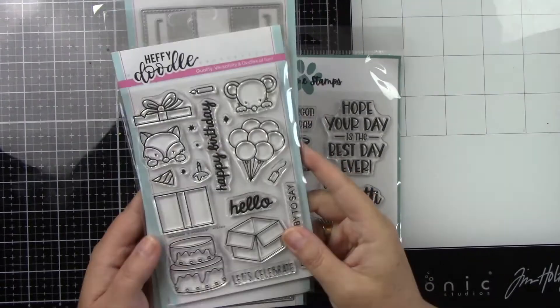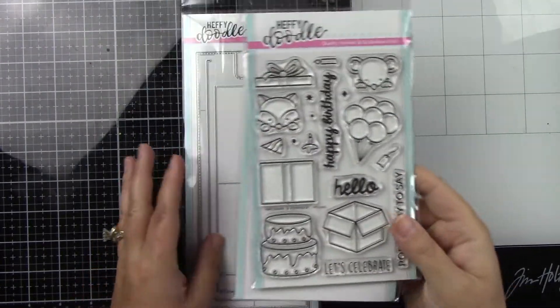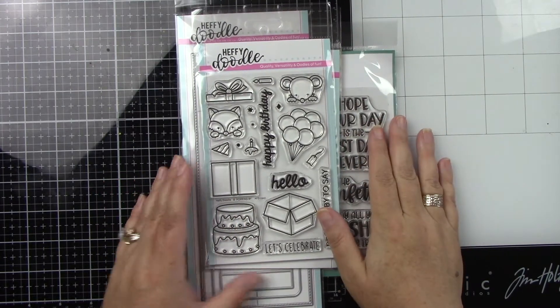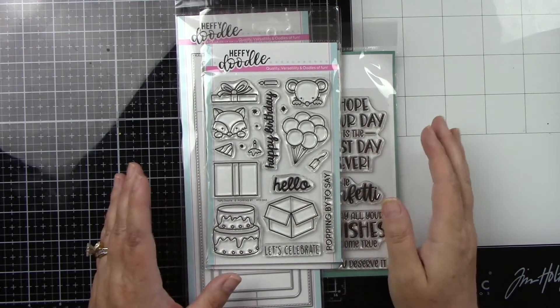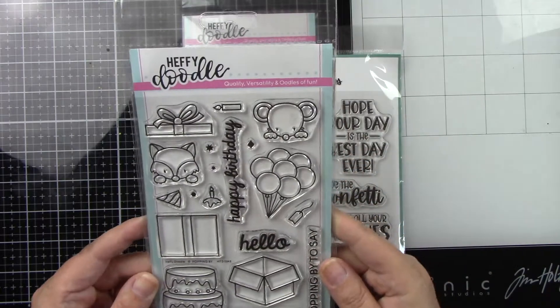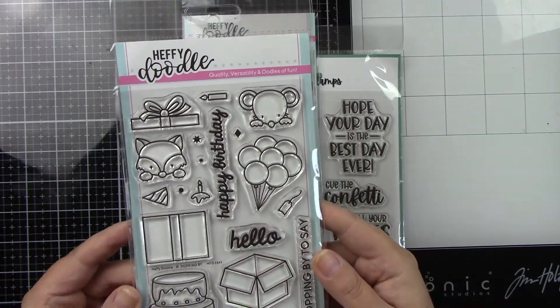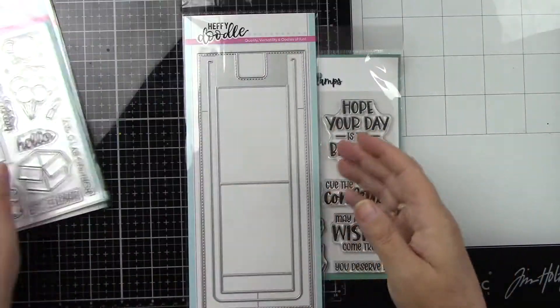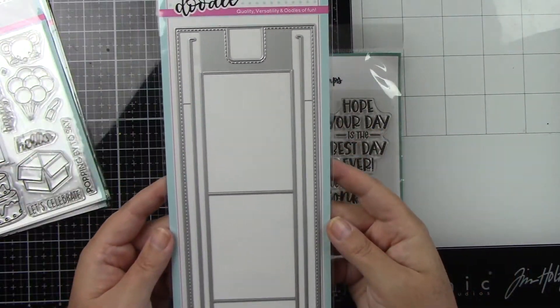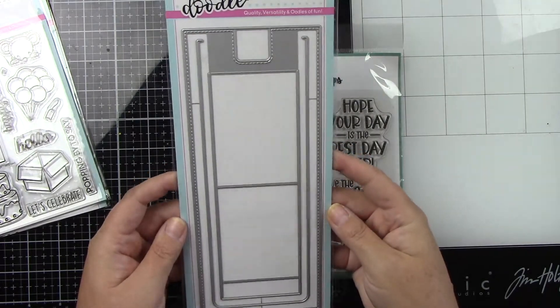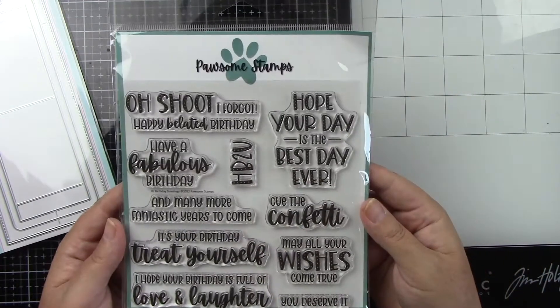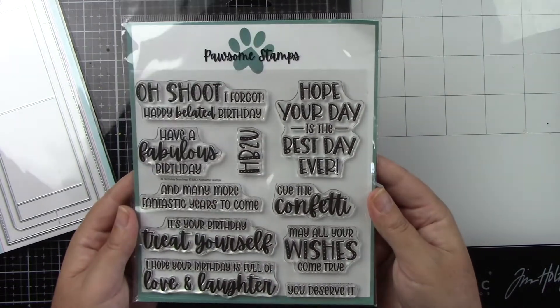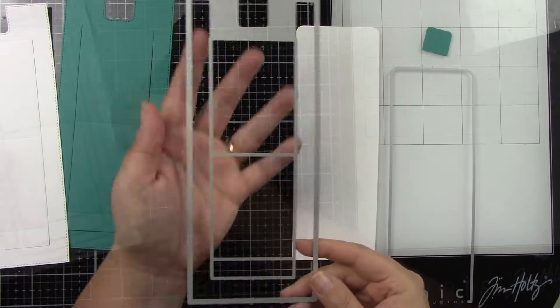This video is part of a blog hop collaboration between Possum Stamps and Heffy Doodle. I'm making an interactive card with some of their products. I'm using the Popping By stamp set with the present and cute little mouse with coordinating dies, the slimline slider pop-up die from Heffy Doodle, and the extra large birthday greetings stamp set from Possum Stamps.